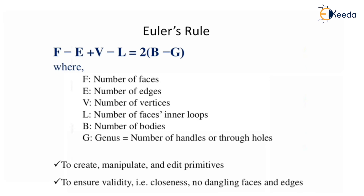Euler's equation: F minus E plus V minus L equals 2 times (B minus G), where F is number of faces, E is number of edges, V is number of vertices, L is number of internal loops, B is number of bodies, and G is genus — that is, number of handles or through holes. This formula is used to create, manipulate, and edit primitives to ensure validity, meaning closeness with no dangling faces and edges.